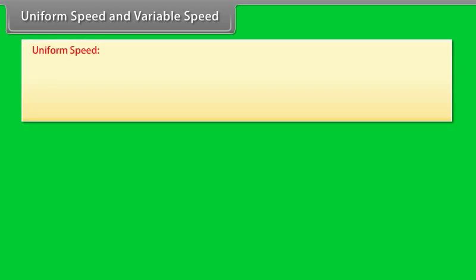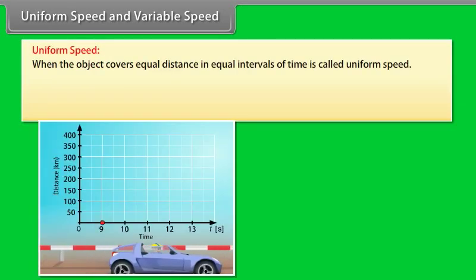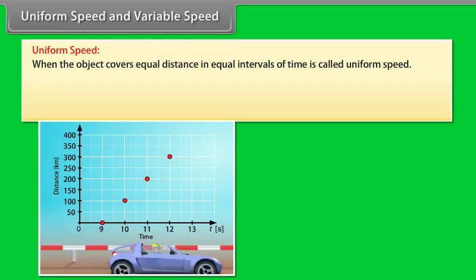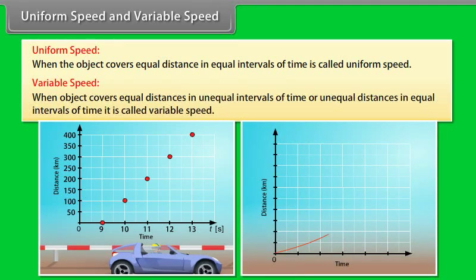Uniform speed and variable speed: Uniform speed is when an object covers equal distances in equal intervals of time. Variable speed is when an object covers equal distances in unequal intervals of time, or unequal distances in equal intervals of time.